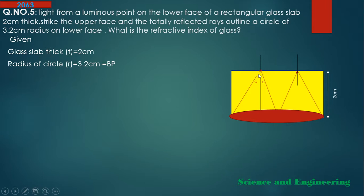The critical angle is C. Naming the geometry: point A is the source, B is the point on the upper face where the critical angle ray hits, and the radius of the circle on the lower face gives us the geometry to calculate C and hence find μ.